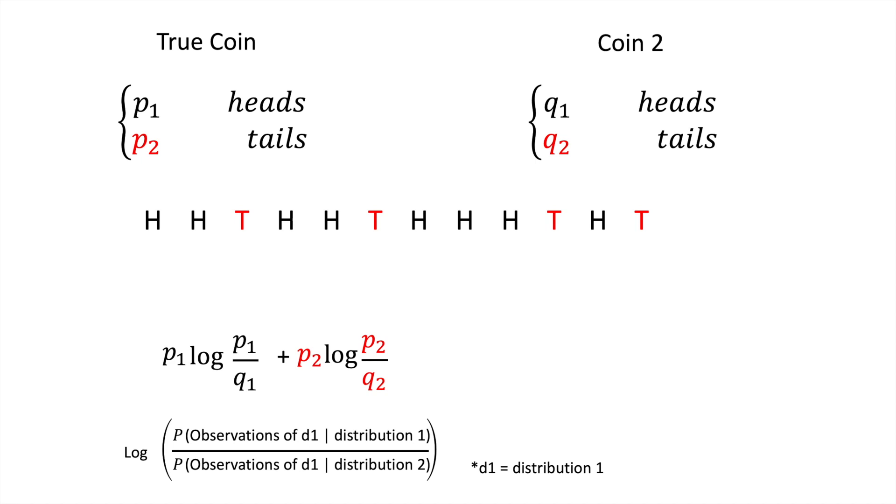If we look at the discrete KL divergence equation again, we notice that the two equations are equivalent. Furthermore, every step of the proof holds true when there are more than two classes, and in fact, the KL divergence is a general form of the normalized log ratio when there are multiple classes.